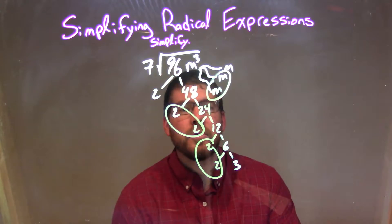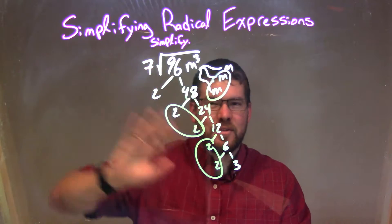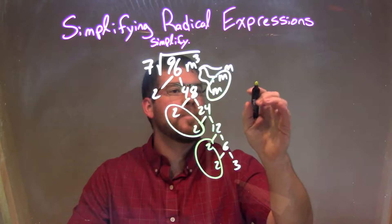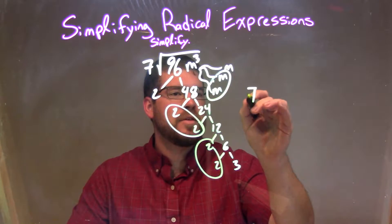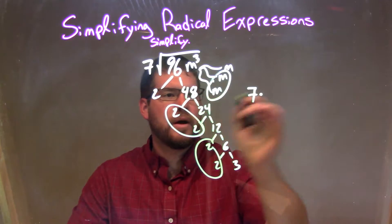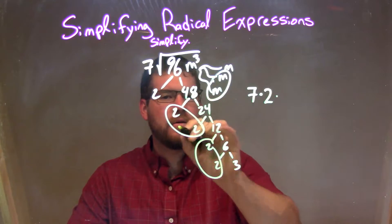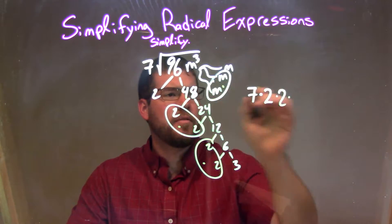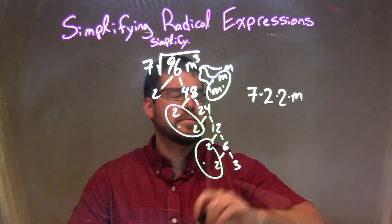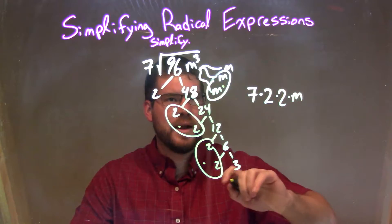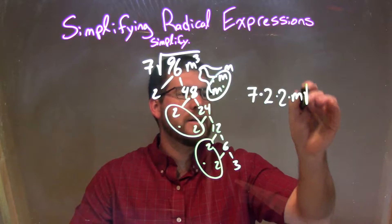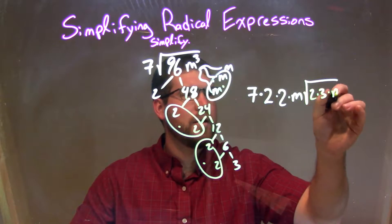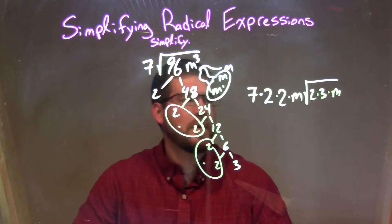Well, that 7 is just on the outside, so it's going to stay on the outside. For every single pair we see, we're going to write that on the outside. So we have my 7 sitting there: 7 times one pair of 2s, times another pair of 2s, times a pair of ms. On the outside it's just 1m. Then everything that stays on the inside of the square root are the singles: 2 times 3 times m — the other one's not paired up.